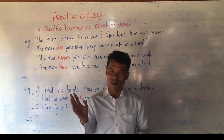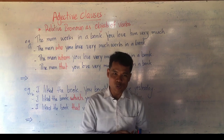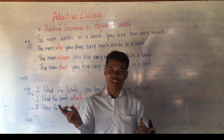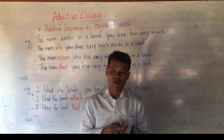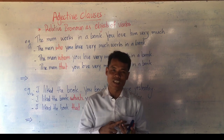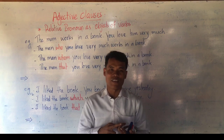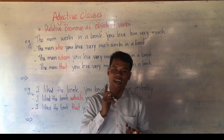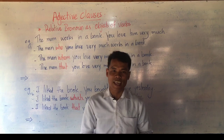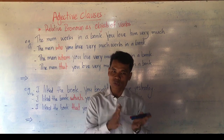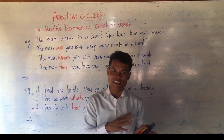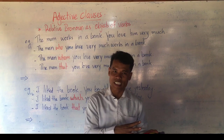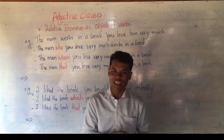You remember the relative pronouns you have learnt: who for a person; whom only as object for a person; which functions as a subject and an object for a thing; that can be used as a subject and object and can be used for both a person and a thing. You know the function of those relative pronouns as a subject and object, and the two types of adjective clauses: defining relative clauses and non-defining relative clauses.